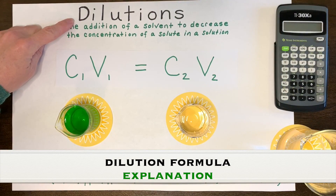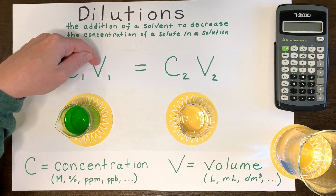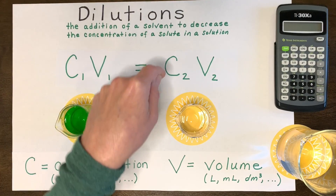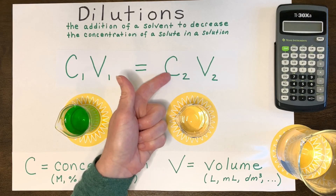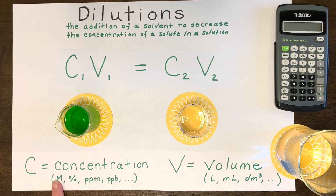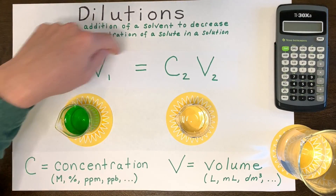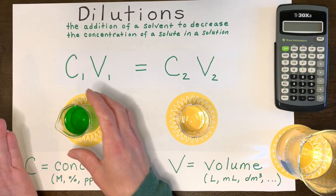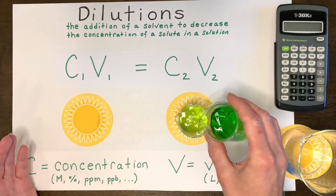Making a solution by dilution is the addition of a solvent to decrease the concentration of the solute in a solution. The formula is C1V1 = C2V2 — concentration one times volume one, which is the more concentrated or initial solution, equals concentration two times volume two, which is the more dilute solution. Make sure your concentration units and volume units are the same on both sides. The concentration changes, but the amount of solute does not — that's what makes this formula work.